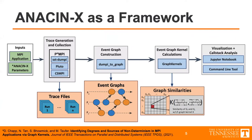Thanks, Kay. To do this, AnsonX as a framework is broken up into four main stages. The first stage traces an input MPI application along with some input parameters outlined in a previous publication by the authors listed at the bottom of the slide. The tracing stage generates and collects traces using three tracing tools — SSTDumpy, Pluto, and CSMPI — which produce many trace files encoding a lot of data about the input application. CSMPI additionally allows us to find call stack data and identify functions that correspond to non-determinism at different points of their execution. In the second stage, we use DumpyGraph to take all the trace files and build a graph-structured model of the data, which we call an event graph.